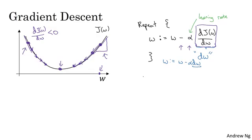If you're not familiar with derivatives or with calculus, and what this term dJ(w)/dw means, don't worry too much about it. We'll talk some more about derivatives in the next video. If you have a deep knowledge of calculus, you might be able to have a deeper intuition about how neural networks work. But even if you're not that familiar with calculus, in the next few videos we'll give you enough intuitions about derivatives and about calculus that you'll be able to effectively use neural networks. The overall intuition for now is that this term represents the slope of the function, and we want to know the slope of the function at the current setting of the parameters so that we can take these steps of steepest descent.